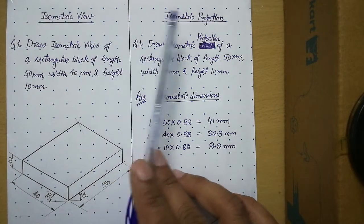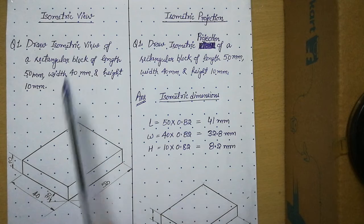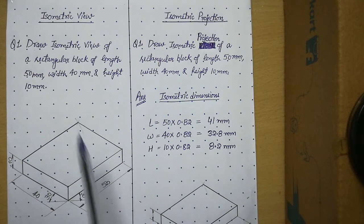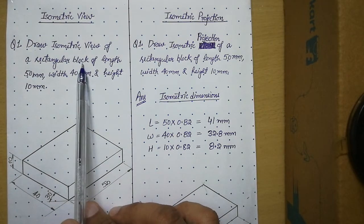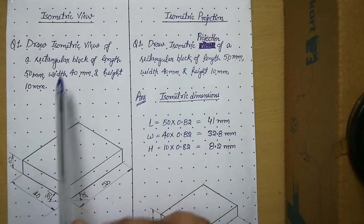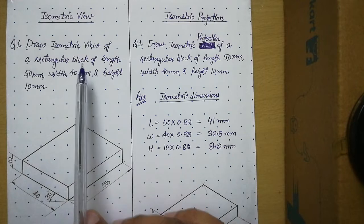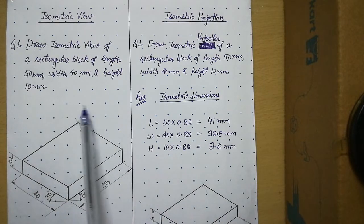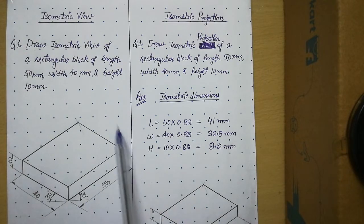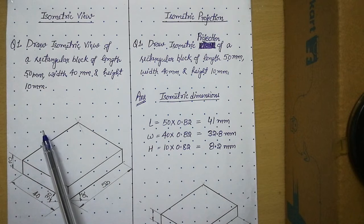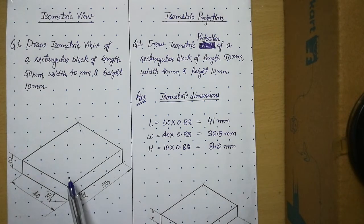So in order to understand these two I have taken same solid. The name of the solid is rectangular block. And in the previous lectures we have discussed how to draw isometric view of a rectangular block. So in this video I will not discuss its procedure because it is already discussed in other videos. You can refer those videos if you want to see the procedure.